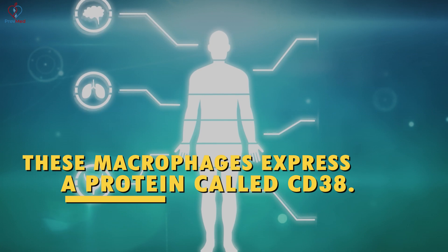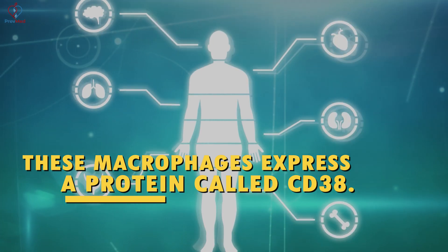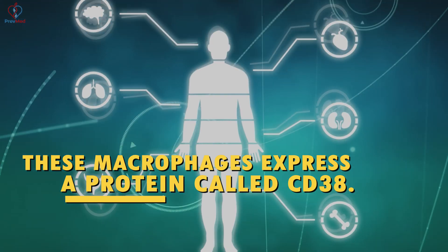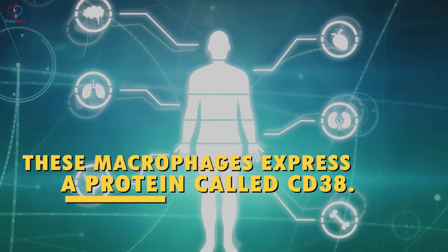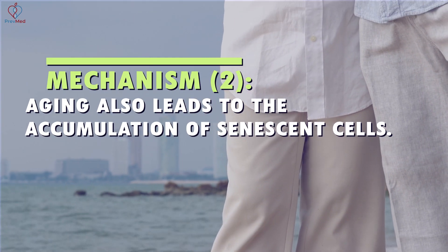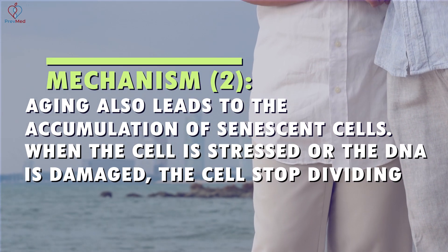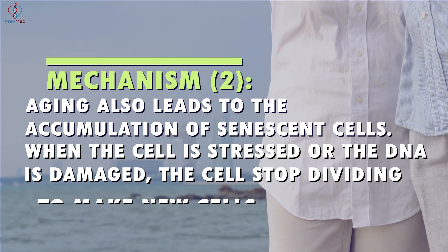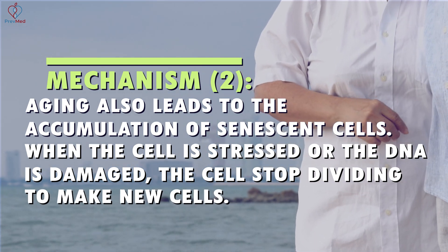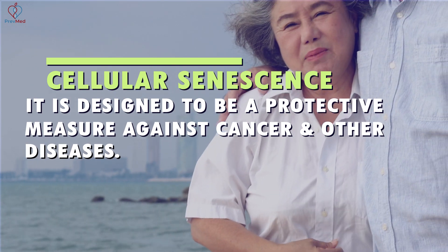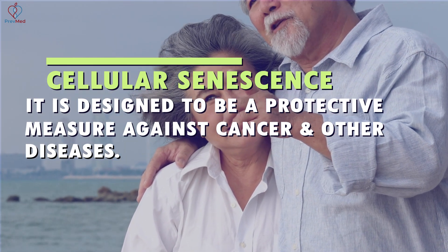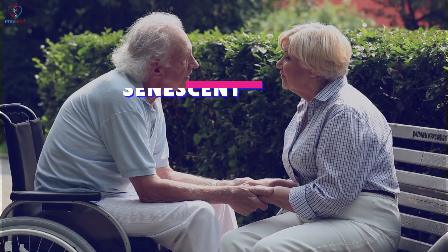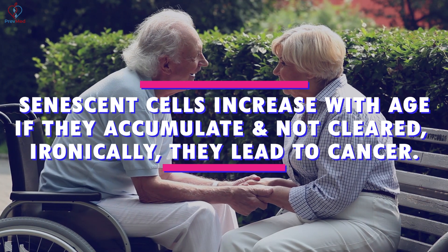These macrophages express a protein called CD38. While CD38 is just one of several NAD-consuming enzymes, it's a major consumer of NAD+. Here's another mechanism: aging also leads to the accumulation of senescent cells. When the cell is stressed or the DNA is damaged, the cell stops dividing to make new cells.